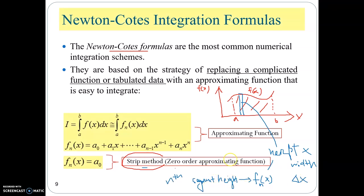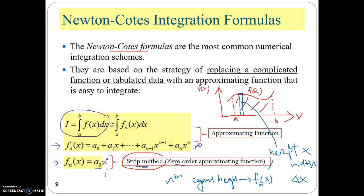The strip method assumes the height to be a constant. Therefore, the height function at a particular segment equals a constant, where you have x to the power of 0. Since x to the power of 0 equals 1, this is also called the zero order method. We have demonstrated how to obtain the integration result using the strip method previously. In general, we can define the height function to be an n-order polynomial function, which is known as the Newton-Cotes formula.